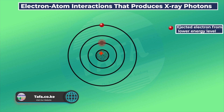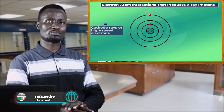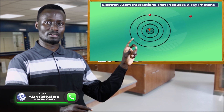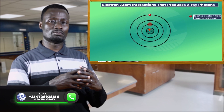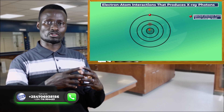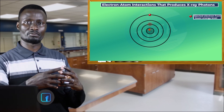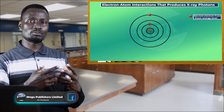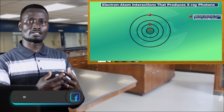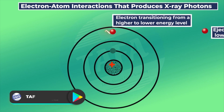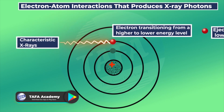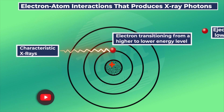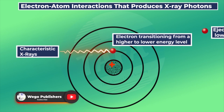The ejected electron creates a void, and that makes the atom to be in an unstable state — it gets excited. For the atom to come back to a stable state, an electron transits from a higher energy level to fill that void left by the ejected electron.